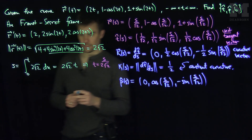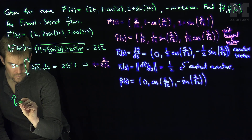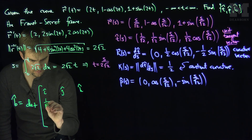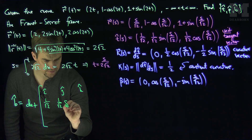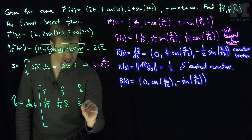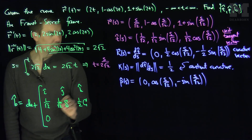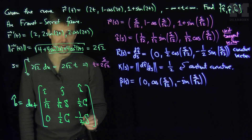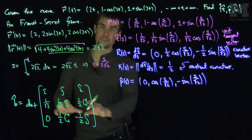To find the unit binormal vector, we compute the cross product T-hat × P-hat. Setting up the determinant with î, ĵ, k̂, the T-hat row is (1/√2, (1/√2)S, (1/√2)C), where S = sin(s/√2) and C = cos(s/√2). The P-hat row is (0, C, −S). We keep in mind that S² + C² = 1, just as sin² + cos² = 1.